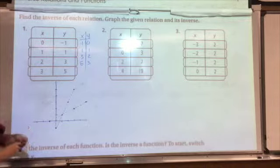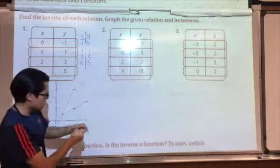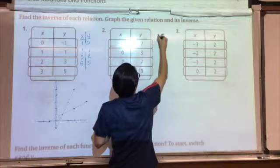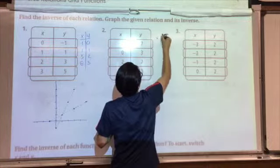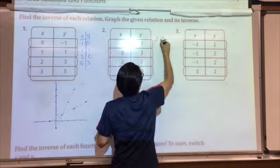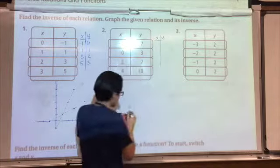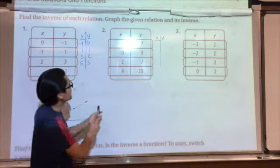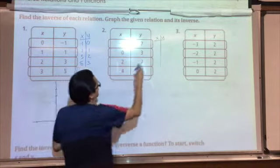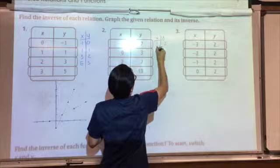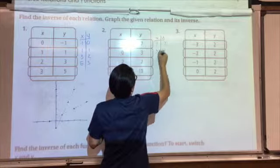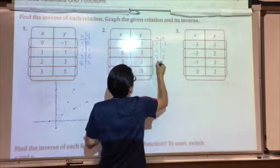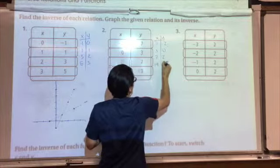Let's do the next two real quick. This one: negative 2, 7. All you're going to do is make a new table and switch the x's with the y's. That's it. So: 7, negative 2; 3, 0; 7, 2; 19, 4.